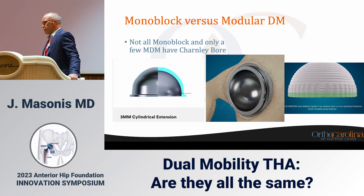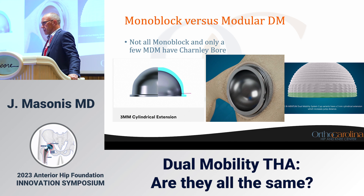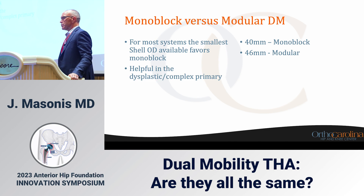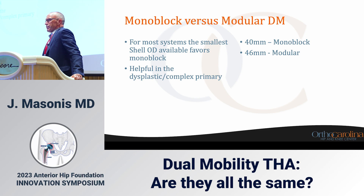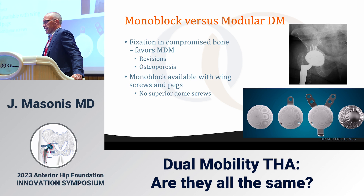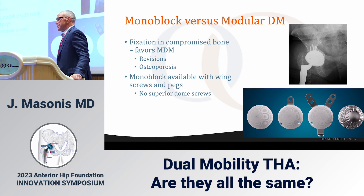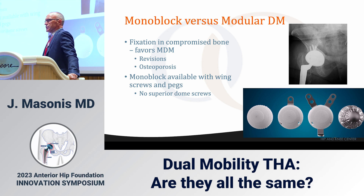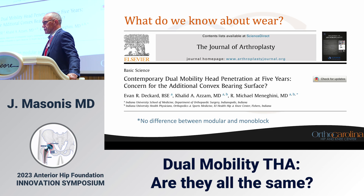For most systems, the smallest shell outer diameter available favors the monoblock design — around 40mm — which is helpful in dysplastic or really complex primaries, while 46mm is usually where modular dual mobilities kick in. Fixation in compromised bone really becomes the question. People say they use modular dual mobilities so they can put screws in the cup. For revisions or poor bone quality, this clearly favors modular dual mobility, though monoblocks are available with some extra-hemispherical fixation adaptation.